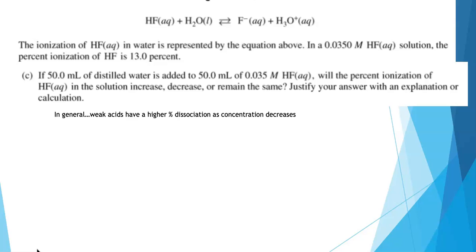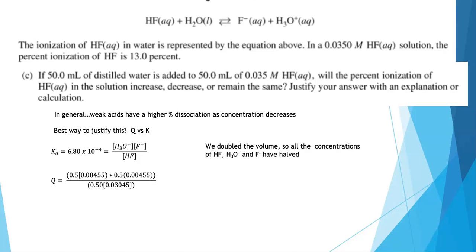It really becomes a Q versus K argument. That's really the best way to answer this question. So here's what I did. I know my Ka expression. We wrote it down on the previous screen. I know the value for Ka. So we had 50 mls of the solution and we added 50 mls of water. We just doubled the volume of the mixture. And that means all the concentrations have halved. And now we have to reestablish equilibrium. The best way to handle those problems is always Q versus K. So this is a little broader strategy. I can say that my hydronium ion concentration is half of what it was. The fluoride ion concentration is half of what it was. The HF concentration is half of what it was.